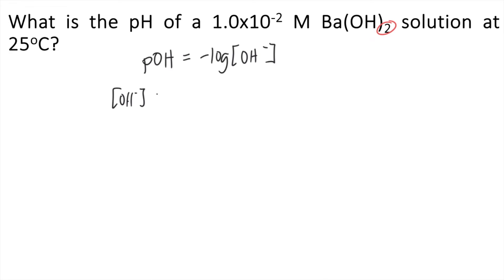So if you want to get the concentration of hydroxide, that's just equal to 1.0 times 10 to the negative 2 molar times 2, because there are 2 hydroxides for every 1 mole of barium hydroxide. So 1 times 10 to the negative 2 times 2, that is 0.02 molar. To get the POH, POH is negative log of 0.02.